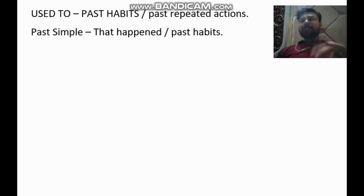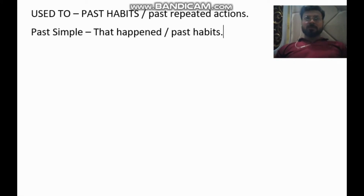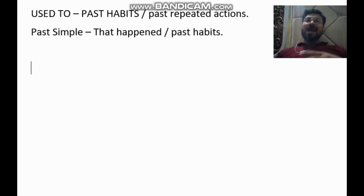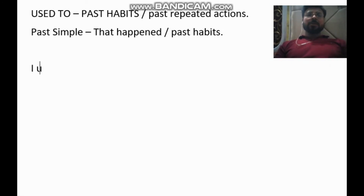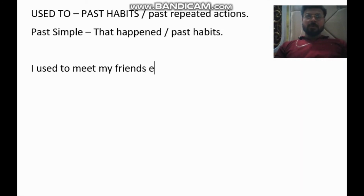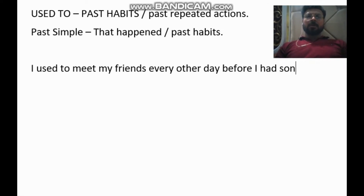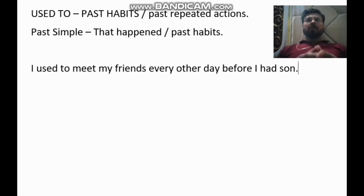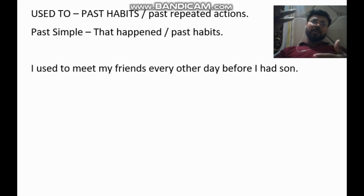Past simple is used for both past repeated actions and actions done once. But if I want to express a hobby or something I did repeatedly in the past, I use 'used to'. For example: 'I used to meet my friends every other day before I had a son.' This means now I don't meet my friends every other day — I meet them occasionally or very rarely compared to before.